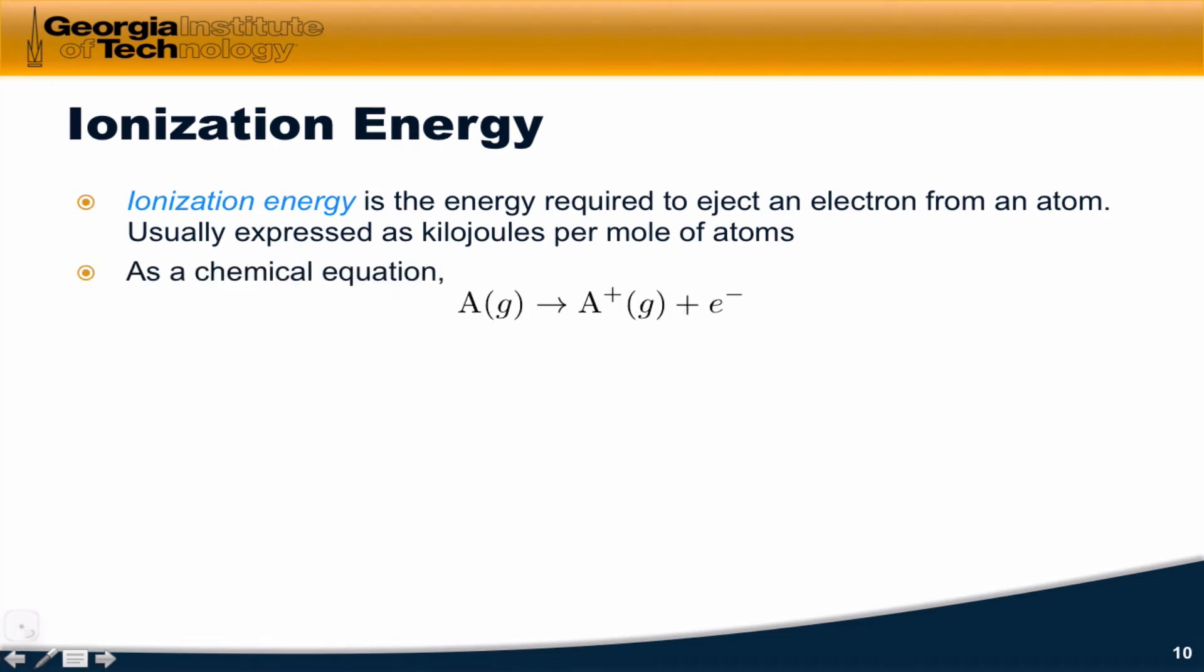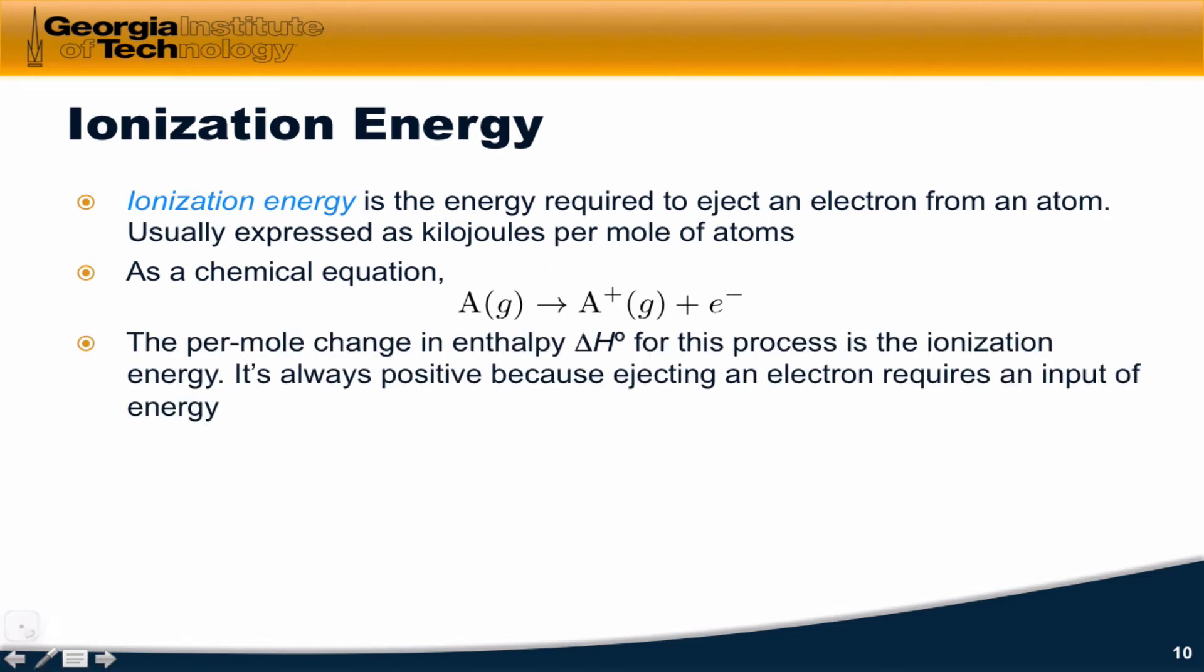In chemical equation form, it looks something like this. We start with atoms of A in the gas phase, and we bombard them with energy to produce an A+ ion, also in the gas phase, and an ejected electron, e-. The per mole change in enthalpy for this process is what we define as the ionization energy.